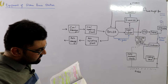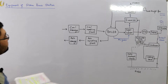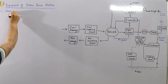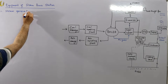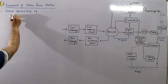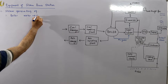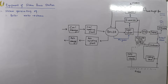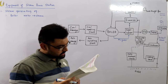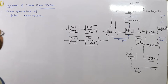The first category is the steam generating equipment. Number one is the boiler. In the boiler, water is heated — utilizing the heat of coal combustion — to be converted into steam. Boilers are classified into two types: water tube boilers and fire tube boilers.